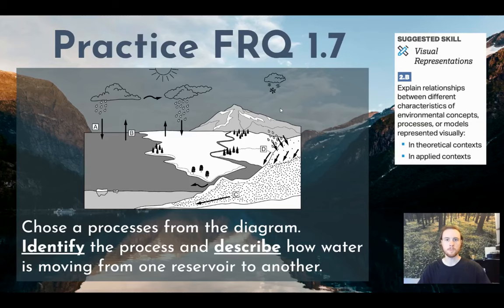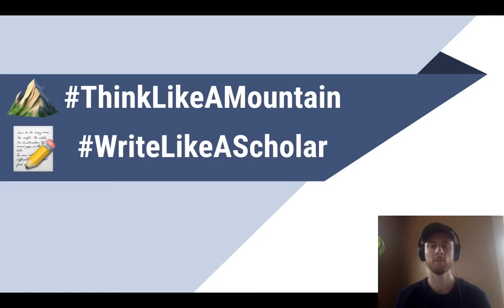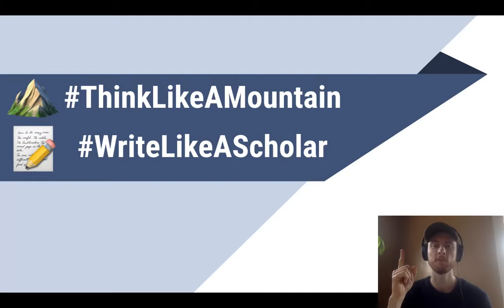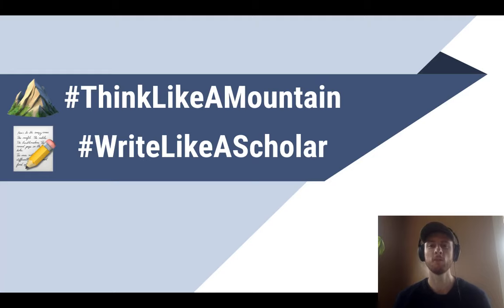Our practice FRQ for topic 1.7 will cover the skill of explaining relationships between concepts in a visual model. Take a look at the diagram of the water cycle — there are four letters: A, B, C, and D. Choose one letter, identify the process being shown, and describe how water is moving from one reservoir to another by that process. Thanks for tuning in — don't forget to like, subscribe, and as always, think like a mountain, write like a scholar.